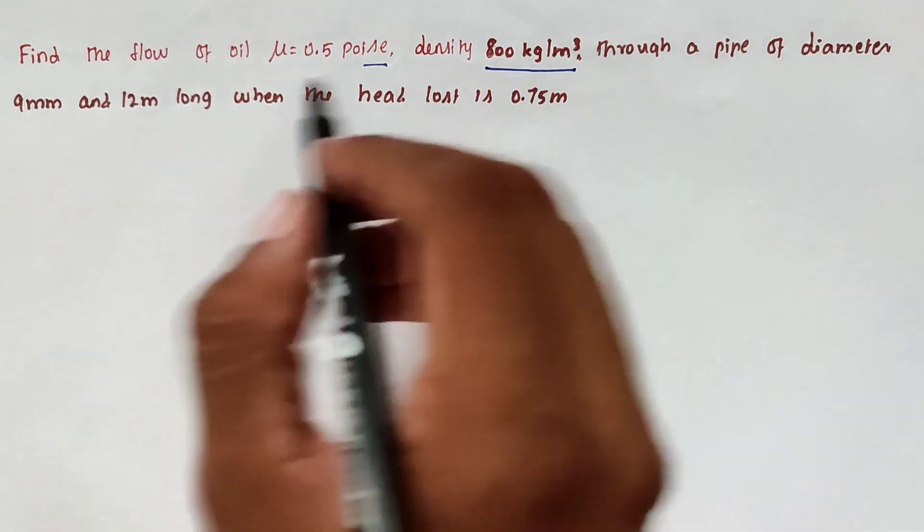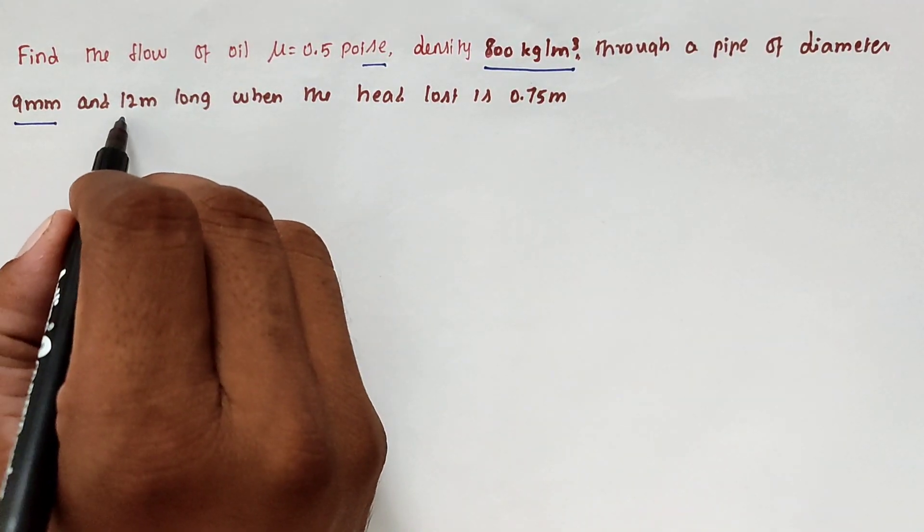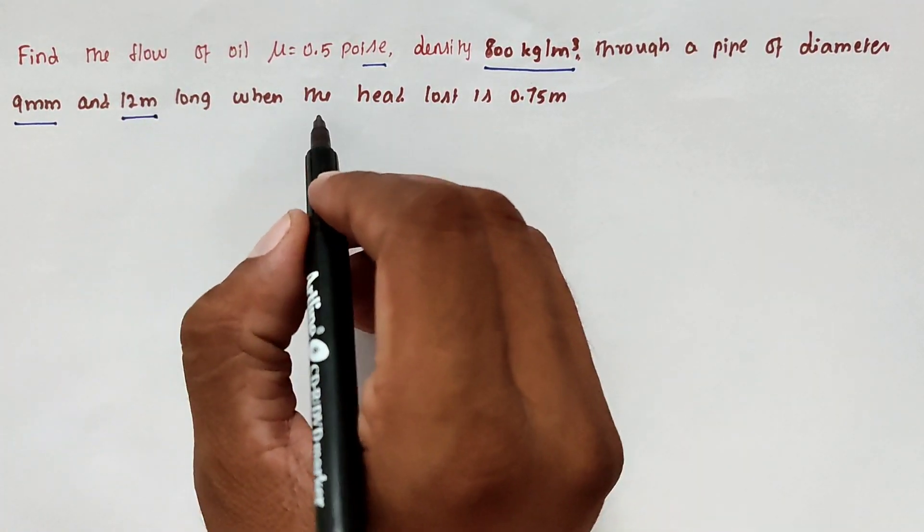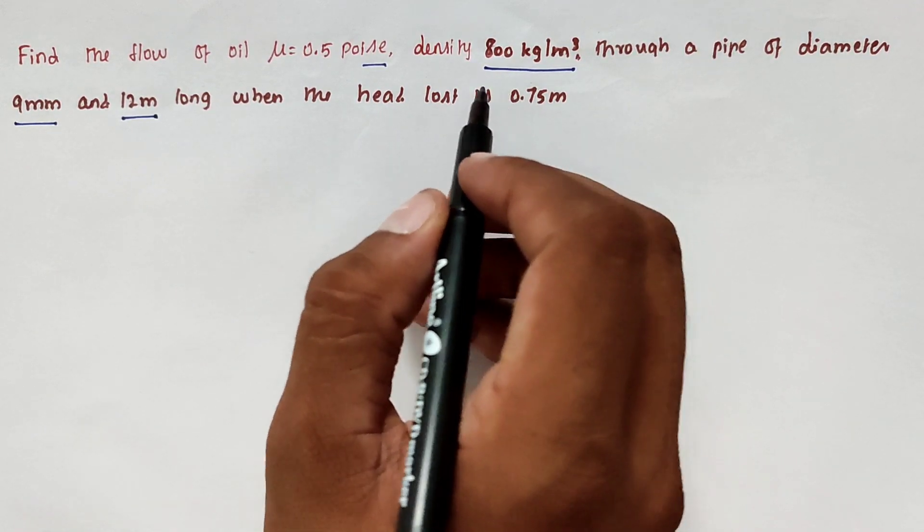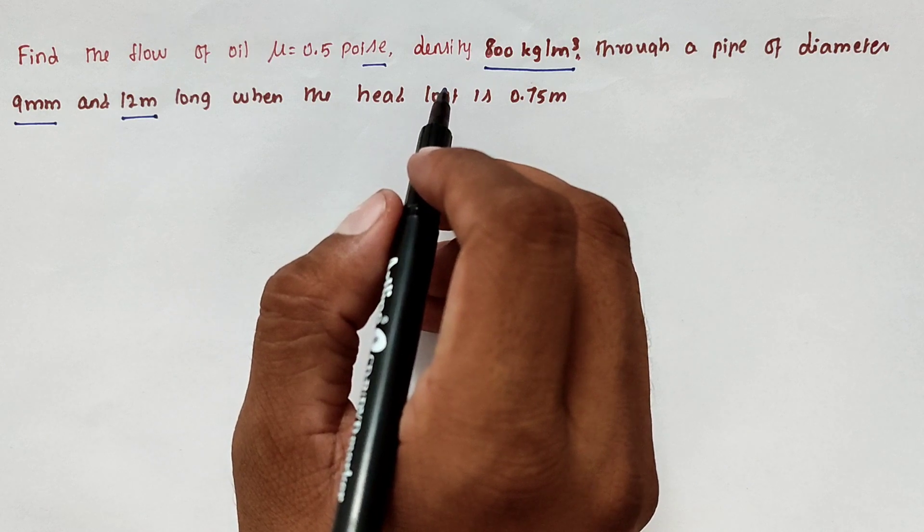through a pipe of diameter 9 mm and 12 meter long when the head loss is 0.75. We have to find out the velocity that is V.